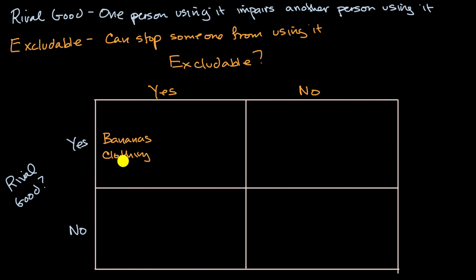Another example is clothing. It's definitely a rival good. If I'm wearing this shirt, it's going to be very difficult for you to wear that shirt as well. And like bananas, you can force someone to pay money for that clothing. They're not just going to get as much clothing as they want for free. You could think of housing. You can exclude someone from your house or from an arbitrary house. They have to pay for it or pay for the rent. And it's a rival good. If one person or one family is using a house, it definitely impairs the ability for another family to use a house. So we could keep thinking of more and more ideas in this top left. In general, goods in this top left are called private goods.